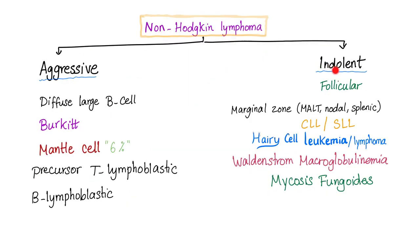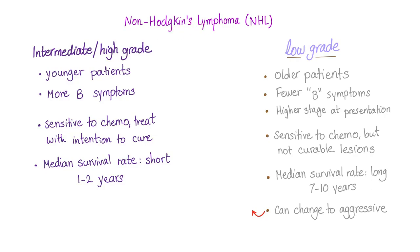Non-Hodgkin's could be indolent or aggressive. Follicular is the most common indolent non-Hodgkin's lymphoma, while diffuse large B-cell lymphoma is the most common aggressive non-Hodgkin's lymphoma — and overall more common than follicular. Non-Hodgkin's lymphoma could be aggressive or high-grade, or indolent, also known as low-grade. Low-grade or indolent — such as follicular — presents in older patients, with fewer B-symptoms and higher stage at presentation.